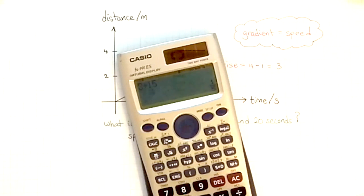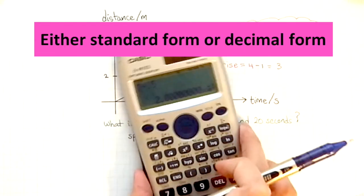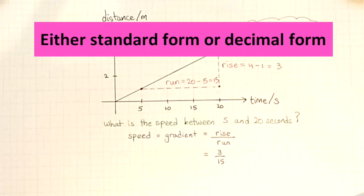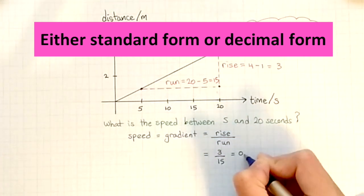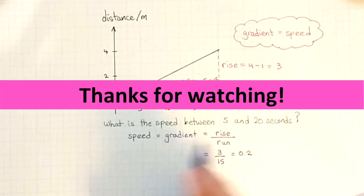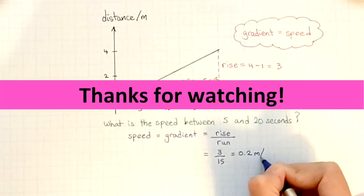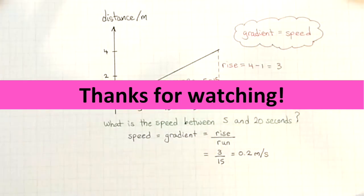Now in physics, we don't tend to leave answers in fractions, so I've got to convert it into standard form. That gives me 0.2 — don't forget the units: 0.2 meters per second.